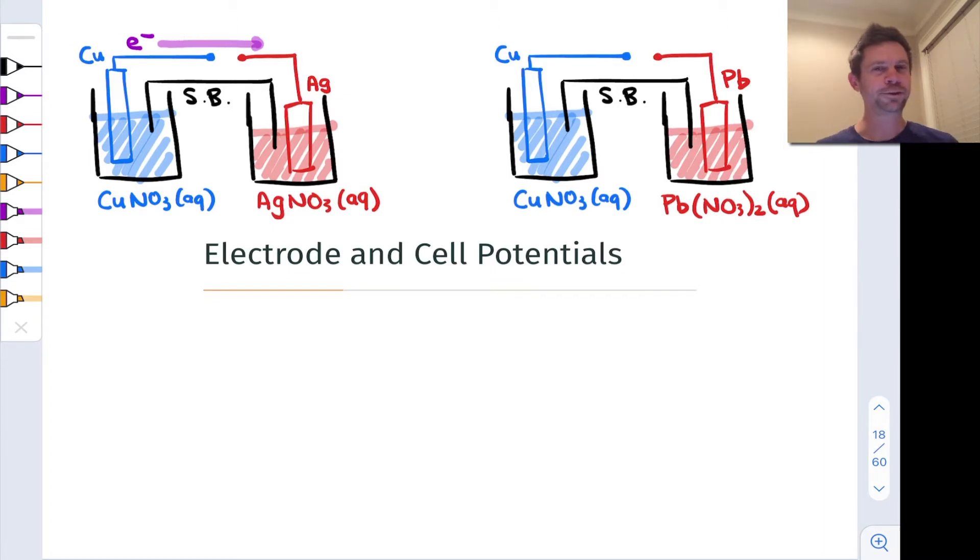But if you swap out the silver with another metal this isn't necessarily what happens. Say for example we wanted to achieve the same thing but we didn't have silver because hey silver is kind of expensive, so we tried to use lead instead, relying on the idea that copper should in theory be able to supply electrons that can reduce Pb2+ to lead metal.